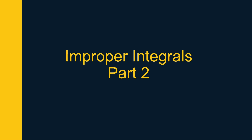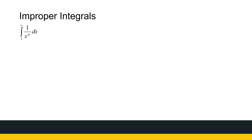We're looking at improper integrals, and we've defined how to find an integral from any value to infinity or from minus infinity to a fixed value. Now we're going to look at a generalization of the integral from 1 to infinity of 1 over x to the power p dx. We saw that the integral of 1 over x squared converges to 1, while the integral of 1 over x is divergent. So we're now going to look at generalizing: for what values of p is it convergent and divergent?